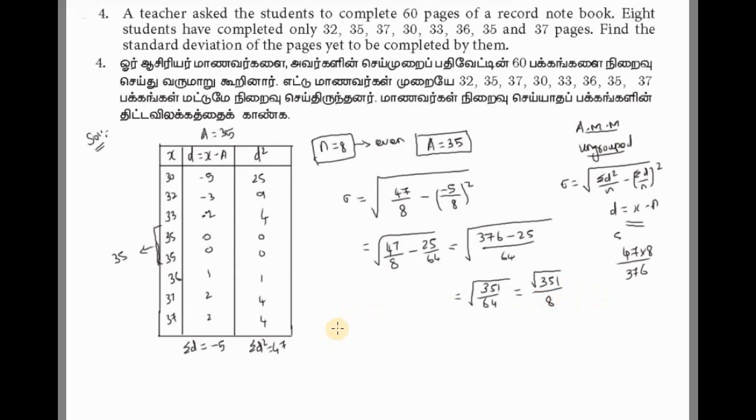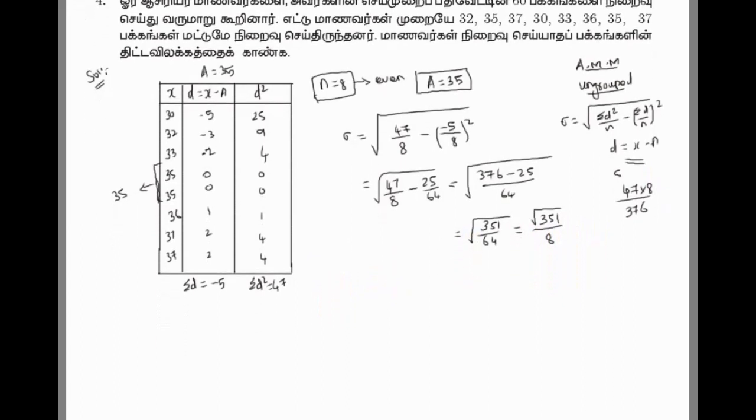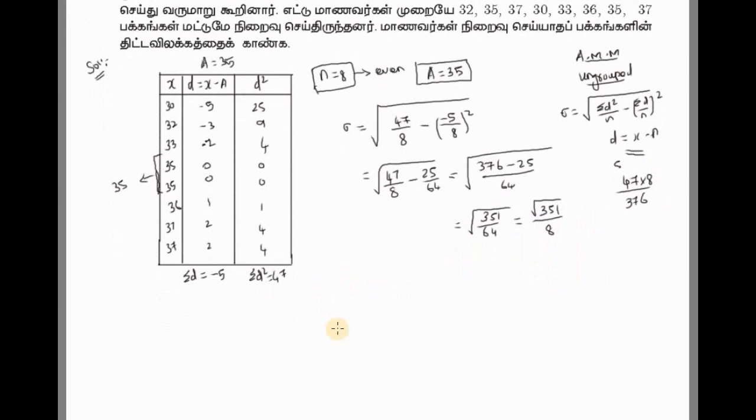This gives us 351 over 64, and we need the square root. So we have square root of 351 divided by 64. We can split this as square root of 351 divided by square root of 64. Square root of 64 is 8.